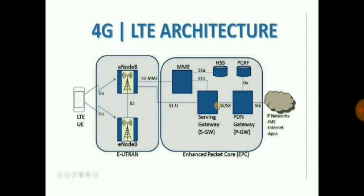The EPC, i.e. evolved packet core, supports the following functions: mobility management, authentication, quality of service, routing, upload and downloading IP packets, and allocation of IP addresses. There is a flat IP architecture that allows the network to handle a great number of data traffic in an efficient and cost-effective manner.